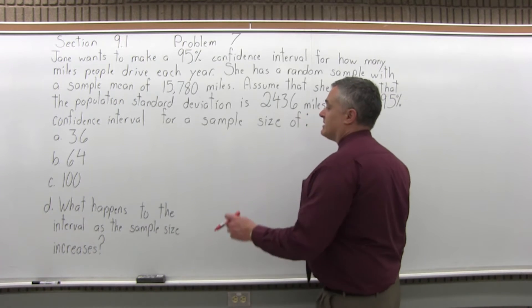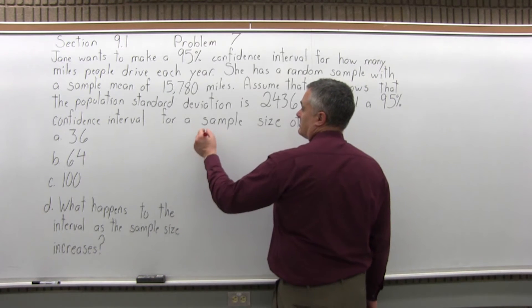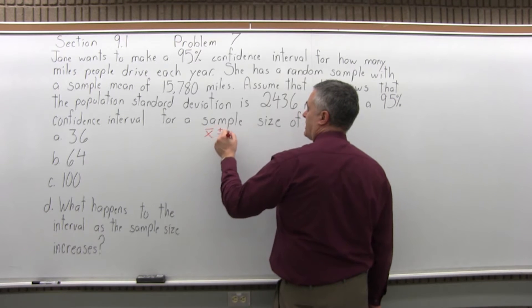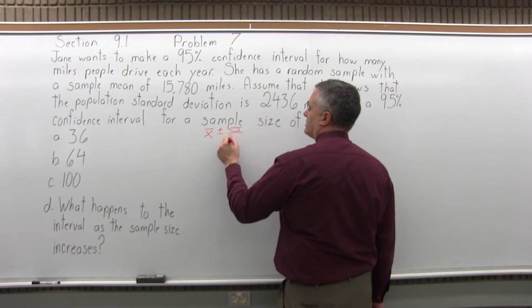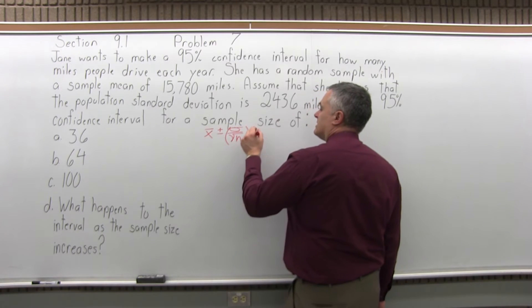Let's start with the confidence interval formula, which is x-bar plus or minus sigma over square root of n, times z sub c.